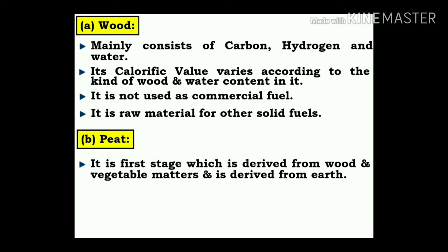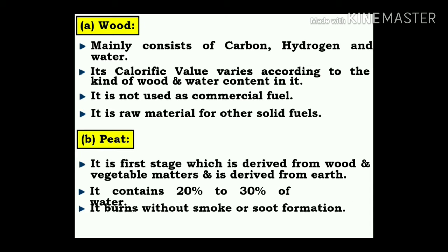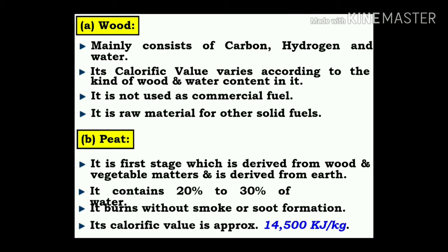Peat: it is the first stage derived from wood and vegetable matter and is obtained from the earth. It contains 20 to 30 percent water. It burns without smoke or soot formation. Its calorific value is approximately 14,500 kJ/kg.